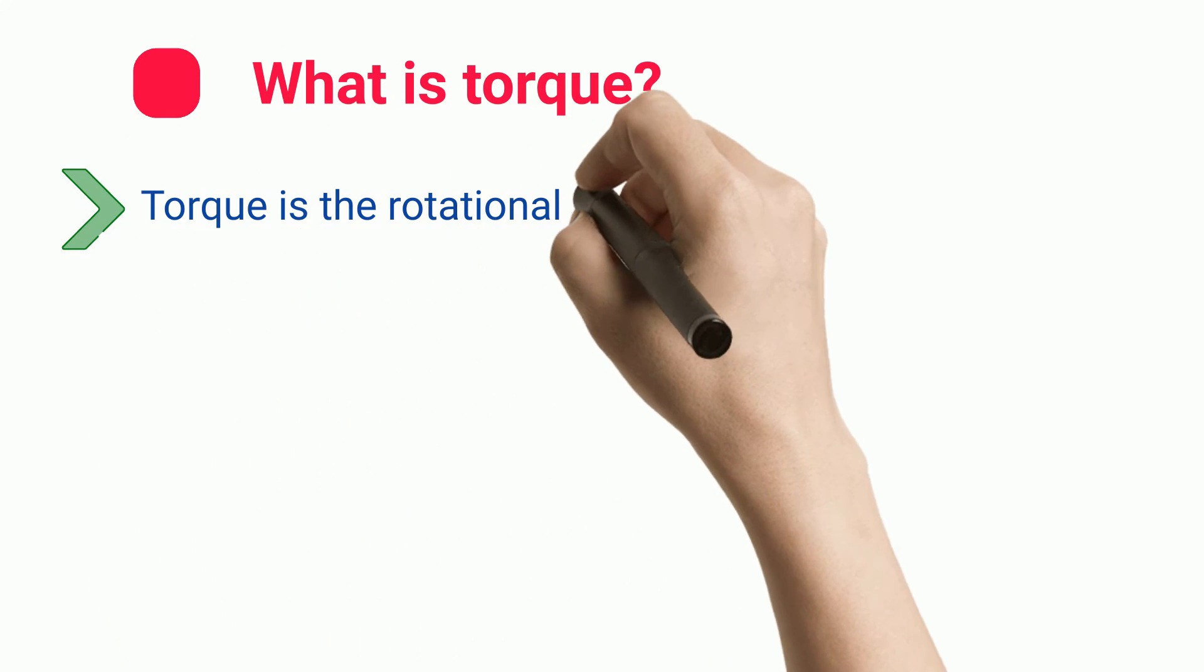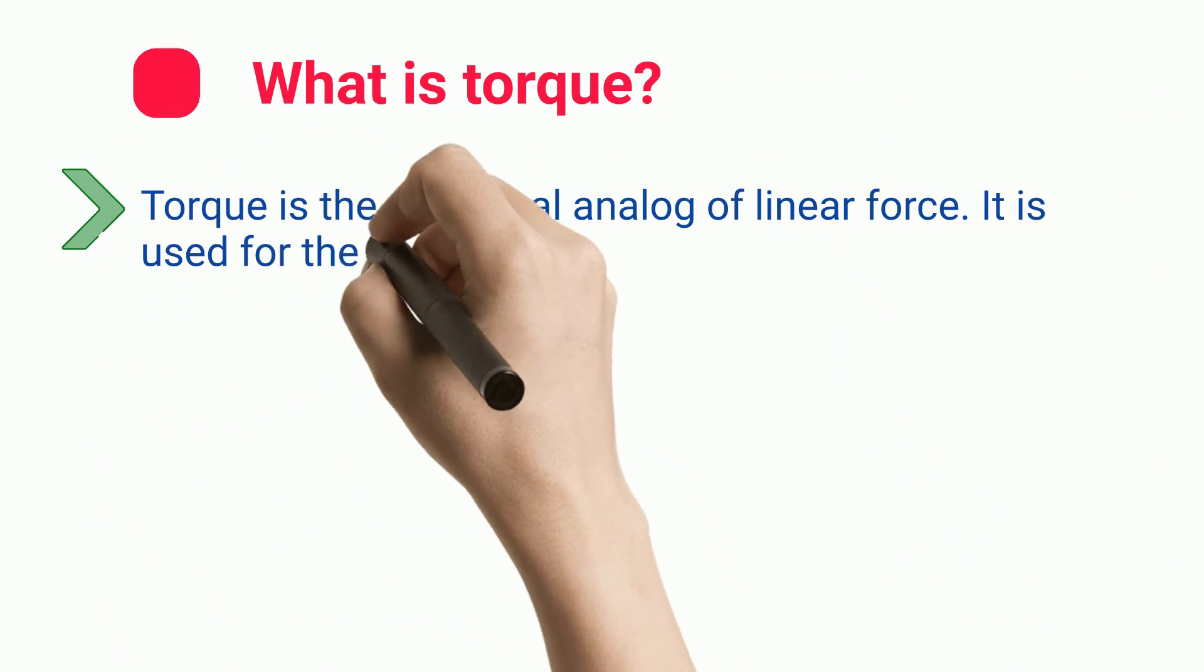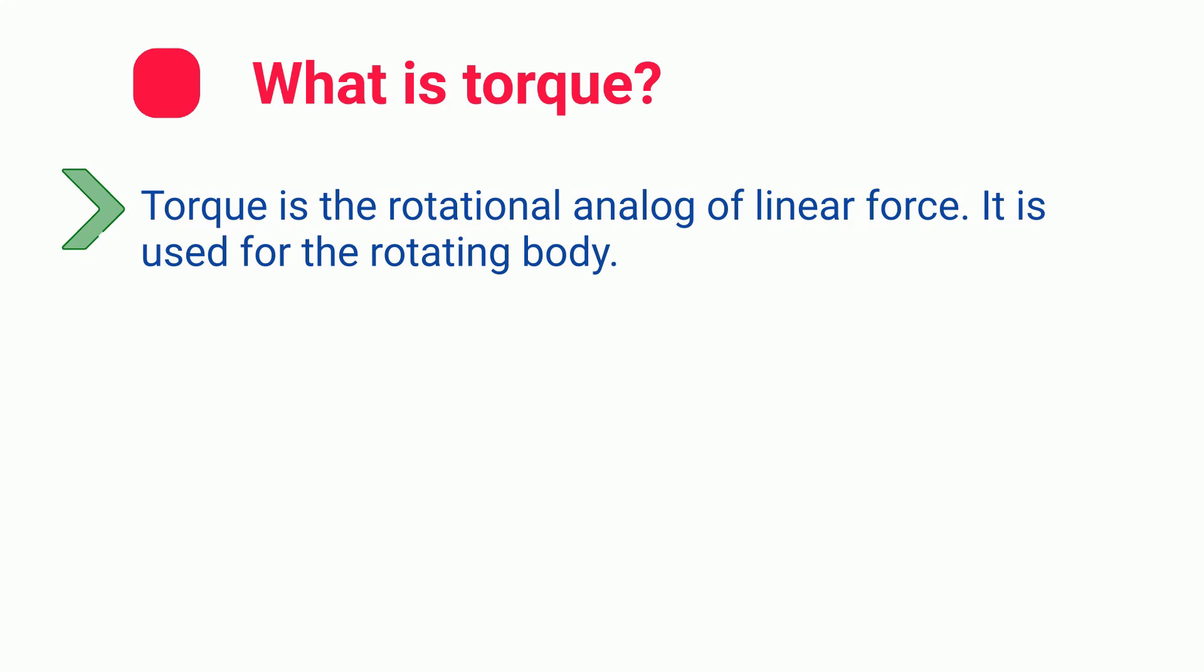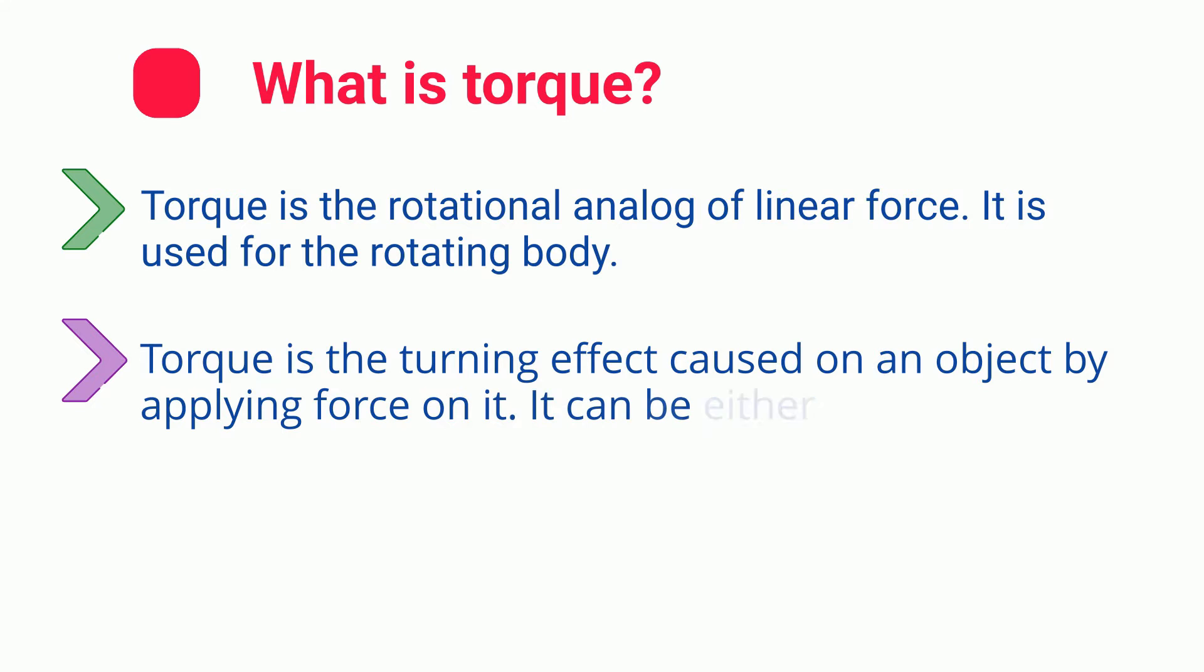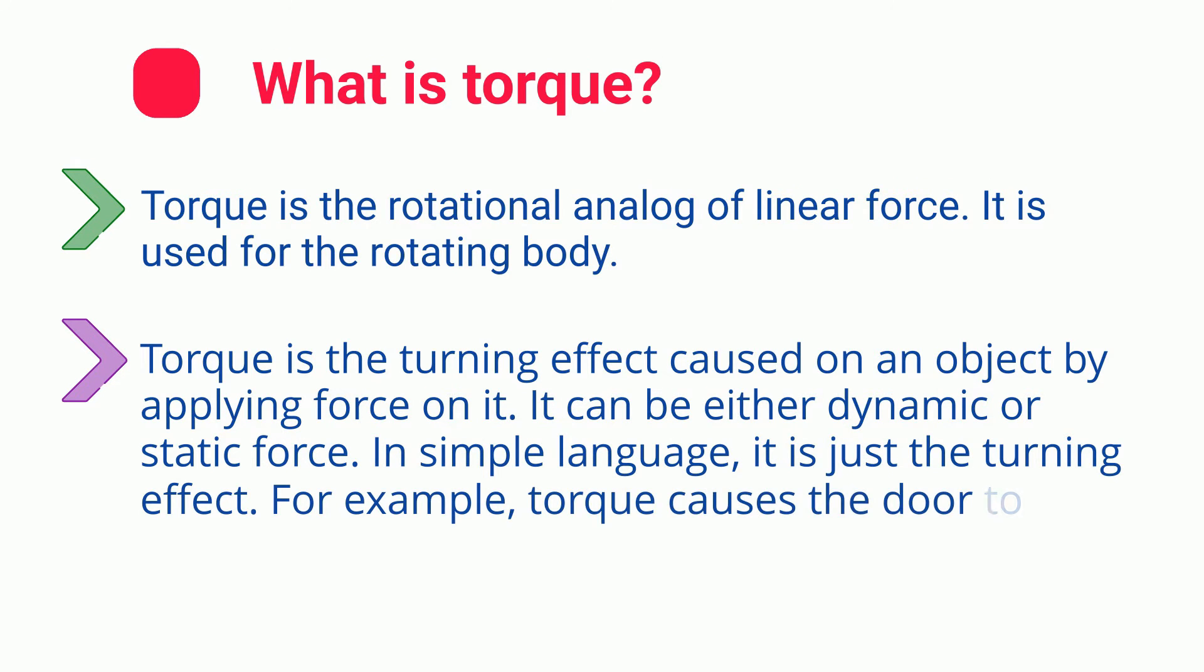What is torque? Torque is the rotational analog of linear force. It is used for the rotating body. Torque is the turning effect caused on an object by applying force on it. It can be either dynamic or static force. In simple language, it is just the turning effect. For example, torque causes the door to turn.